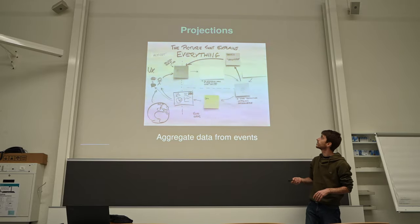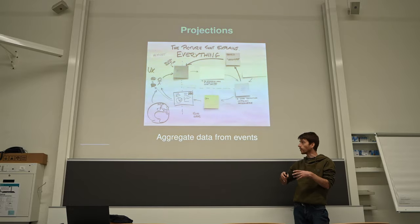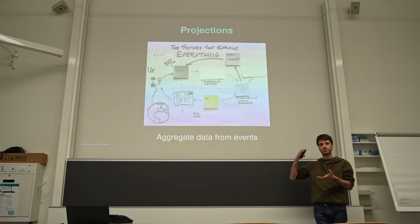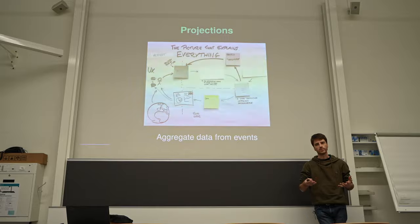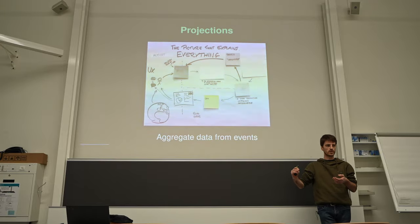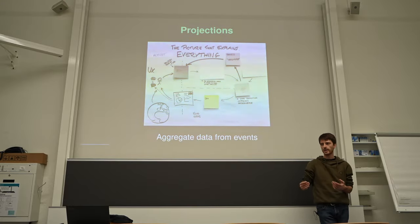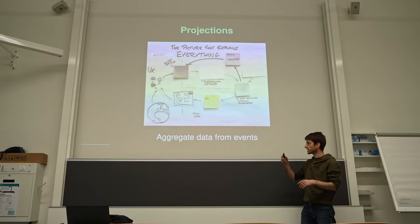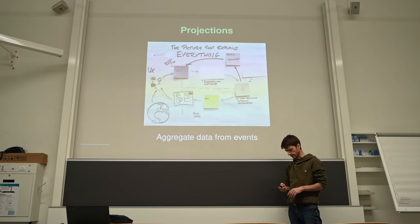The last part are projections, which basically take all the data you have in your events — all the changes which happen in your system — and aggregate those data to create the data you want to show your user. For example, you have a bunch of events telling you 'this item was added to the cart' multiple times, but you don't want to present just a list of actions. You want to present just the state of the cart. That's the role of projections.